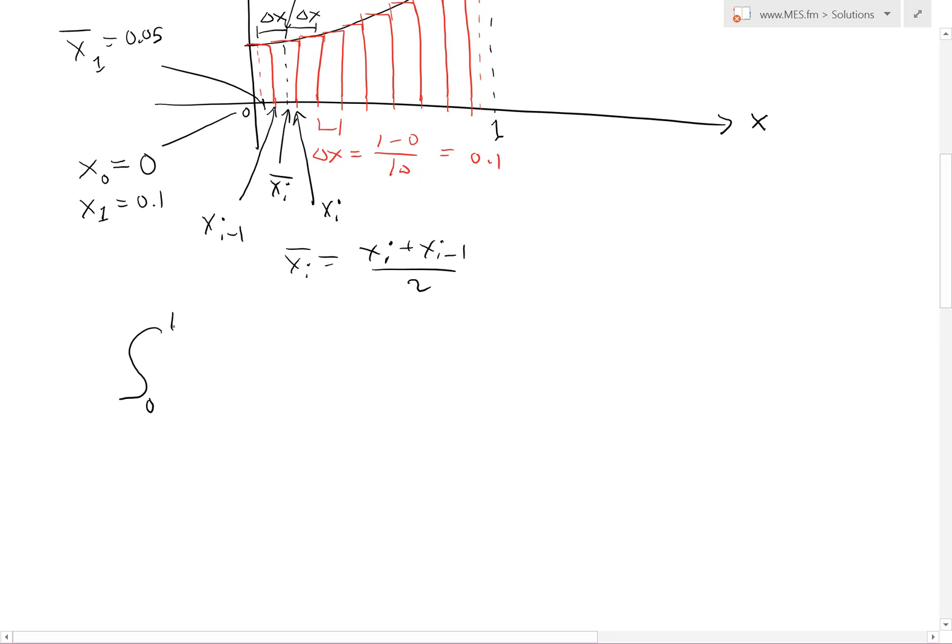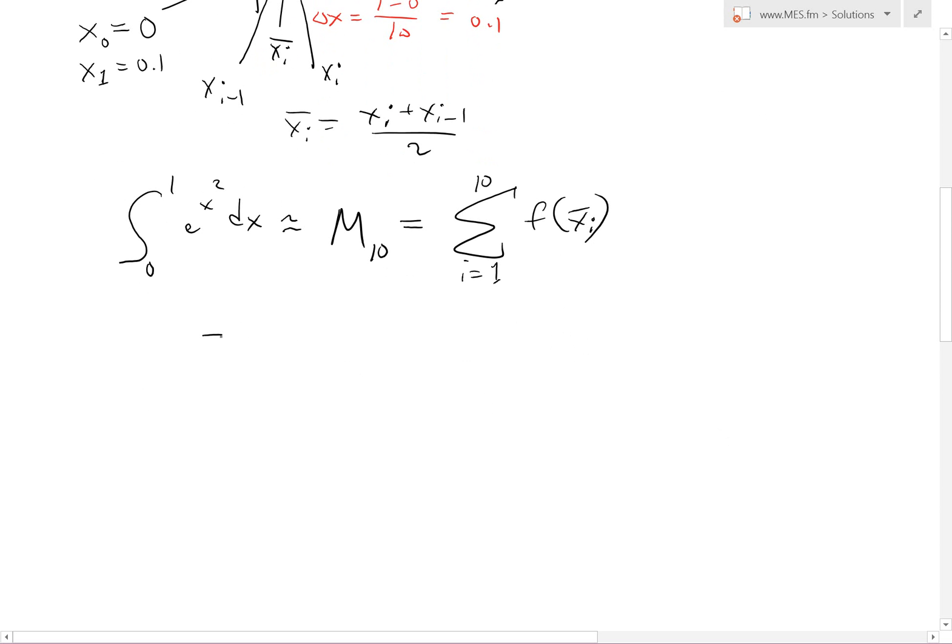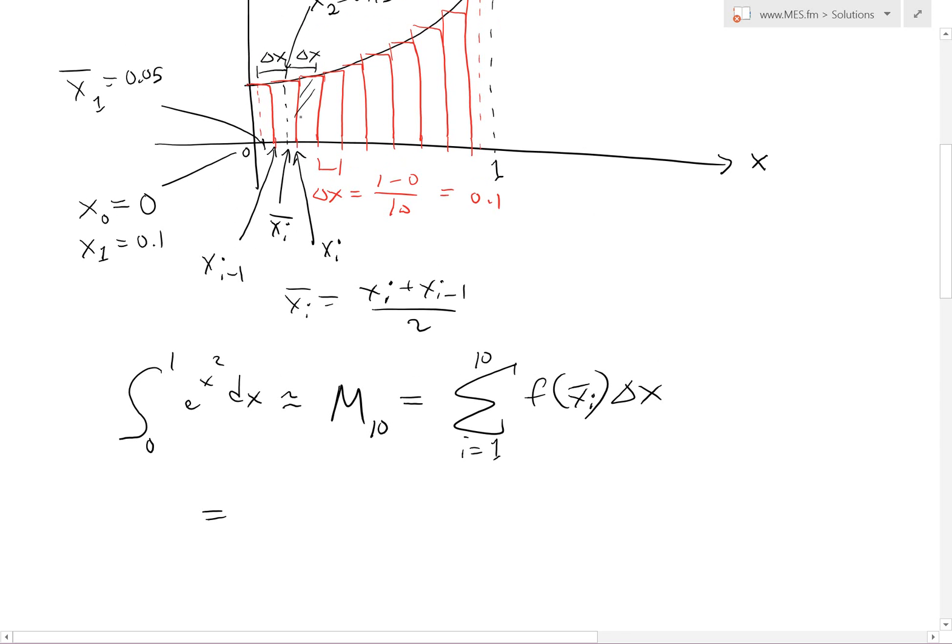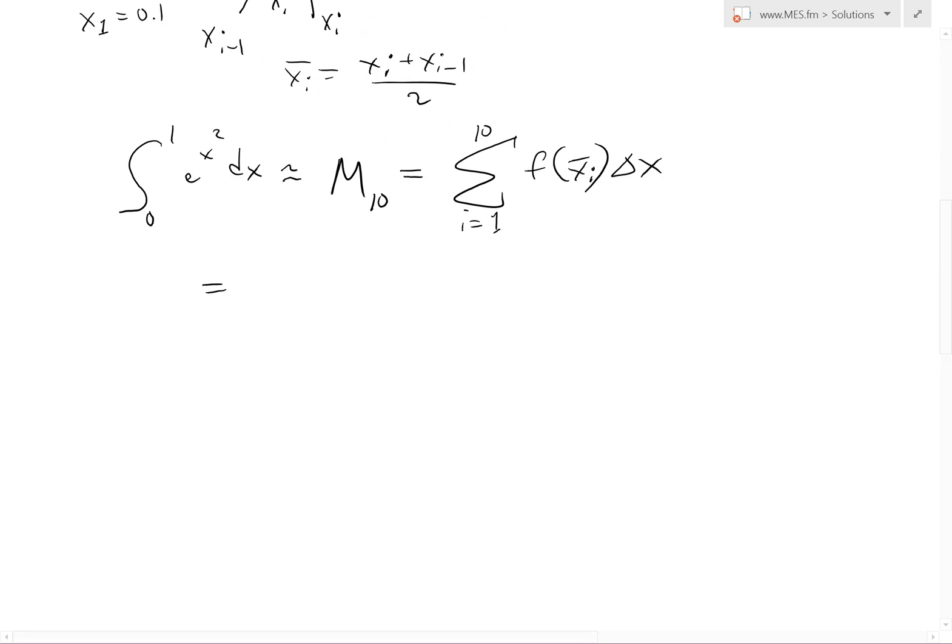And the distance across from here is delta x. So it's always going to be added by point one. So at this point right here, we get x two bar equals point zero five plus point one, point one five. And again, the integral now is approximated by e to the x squared dx equals to, or roughly equal to, we'll call this M 10 for midpoint approximation with 10 intervals. And this equals to, like I showed, the summation from i equals one up to n, which is 10 in this case. And that's going to be f of xi bar times delta x.